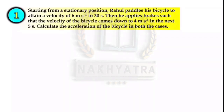Now see question number 1. Starting from a stationary position, Rahul paddles his bicycle to attain a velocity of 6 meter per second in 30 seconds. Then he applies brakes such that the velocity of the bicycle comes down to 4 meter per second in the next 5 seconds. Calculate the acceleration of the bicycle in both the cases — first when Rahul paddles, and second after applying brakes.